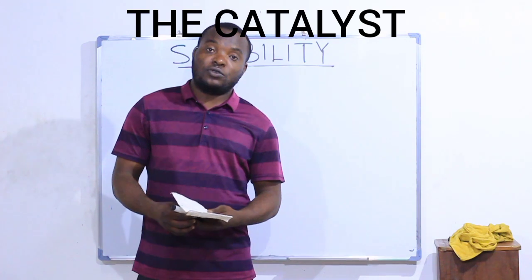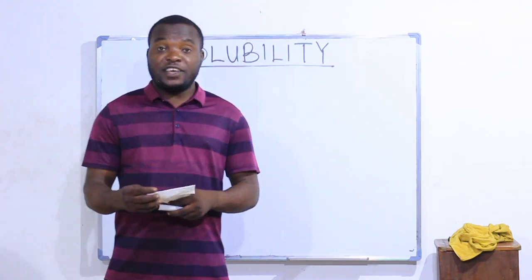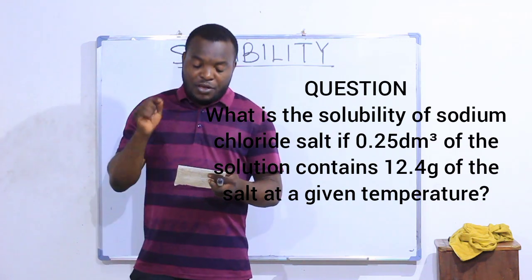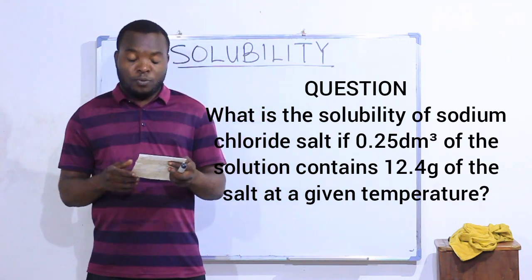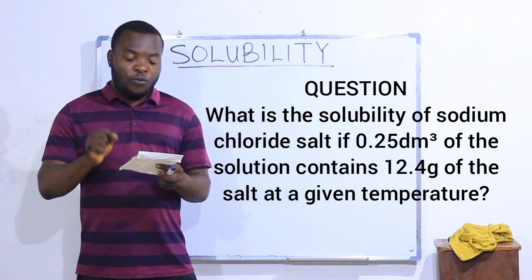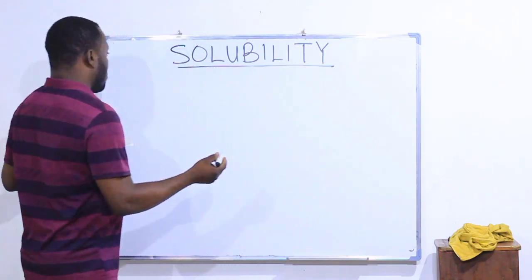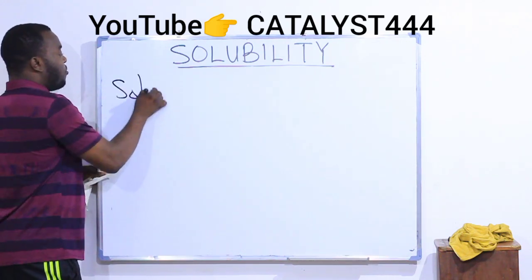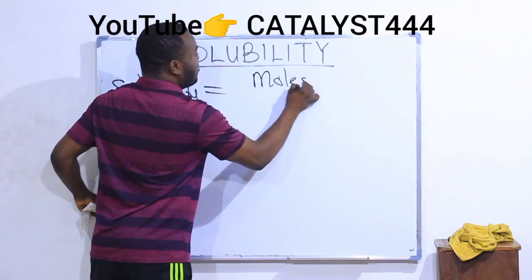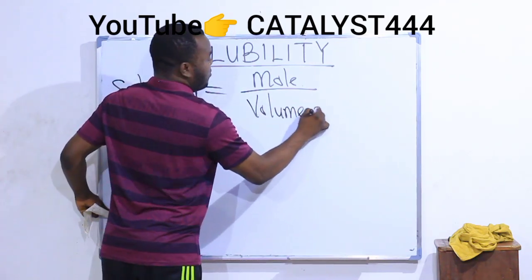Now we are going to look at another question on calculation of solubility. The question says: what is the solubility of sodium chloride if 0.25 dm³ of the solution contains 12.4 grams of the salt at a given temperature? Recall that our solubility formula says solubility is equal to the number of moles present divided by volume in dm³.